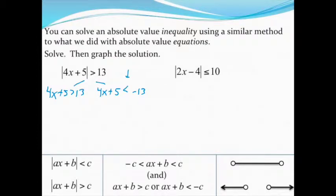That's really the only difference, other than we'll graph the solution when we're done, like we'd normally graph inequality problems. So let's solve each side. I'm going to get 4x has to be greater than 8. Divided both sides by 4, so there's my x is greater than 2.